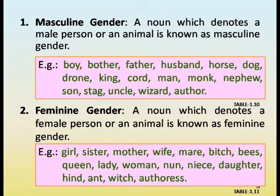Masculine gender: a noun which denotes a male person or animal is known as masculine gender. Feminine gender: a noun which denotes a female person or animal is known as feminine gender. Examples: girl, sister, mother, wife, mare, bitch, queen, lady, woman, niece, daughter, aunt, witch, authoress.